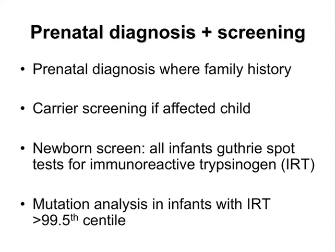Newer therapies now available include lung transplantation, which has a 50% survival at 5 years, and gene therapy where trials are underway. Prenatal diagnosis is offered where there is a family history of cystic fibrosis and carrier screening if there is an affected child. A newborn screen is offered to all infants — they have a Guthrie spot test for immunoreactive trypsinogen (IRT). Mutational analysis is offered in infants with an IRT above the 99.5th centile.